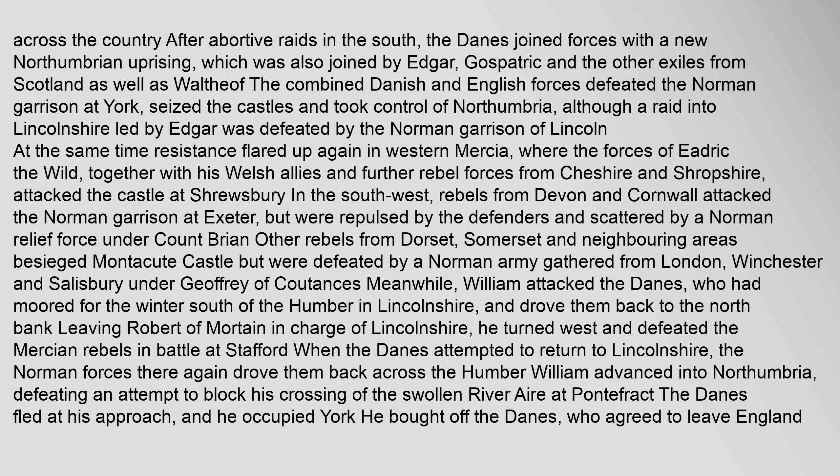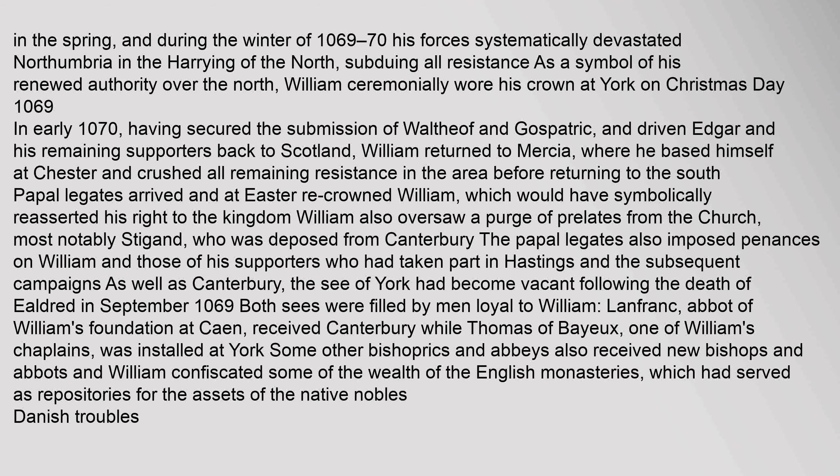In the southwest, rebels from Devon and Cornwall attacked the Norman garrison at Exeter but were repulsed. Other rebels from Dorset, Somerset and neighbouring areas besieged Montacute Castle but were defeated by a Norman army gathered from London, Winchester and Salisbury. Meanwhile, William attacked the Danes, who had moored for the winter south of the Humber in Lincolnshire, and drove them back. He turned west and defeated the Mercian rebels in battle at Stafford. William advanced into Northumbria, and he occupied York. He bought off the Danes, who agreed to leave England in the spring. During the winter of 1069–70, his forces systematically devastated Northumbria in the harrying of the north, subduing all resistance. William ceremonially wore his crown at York on Christmas Day 1069.